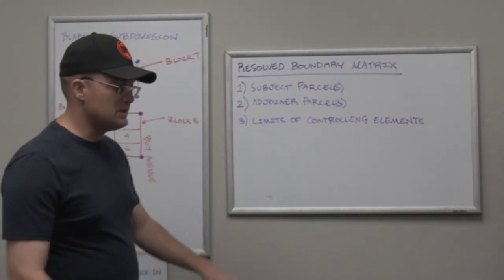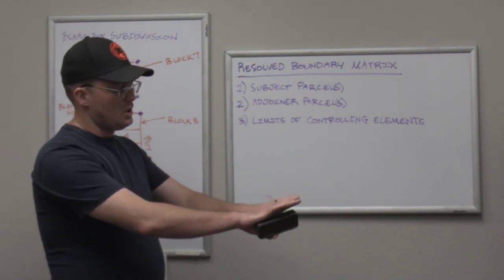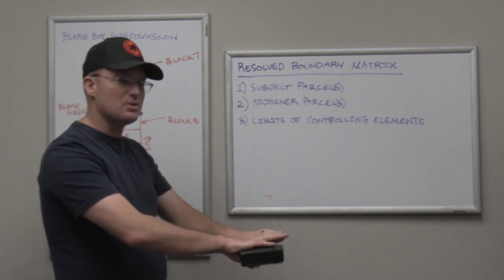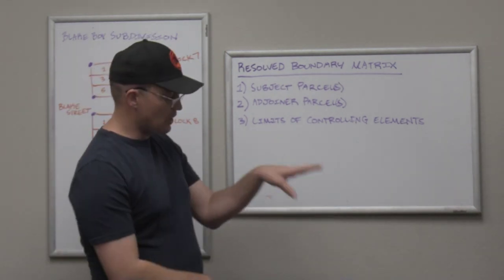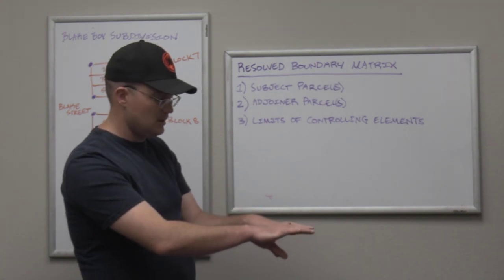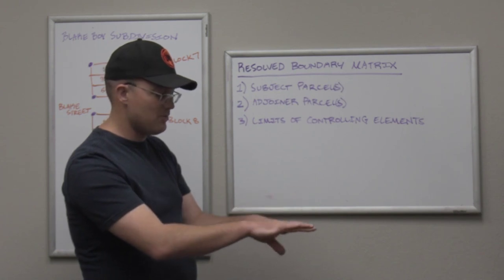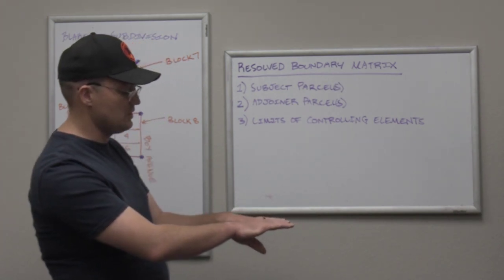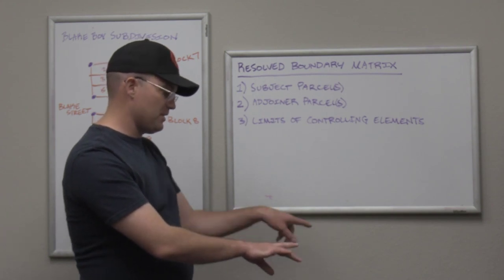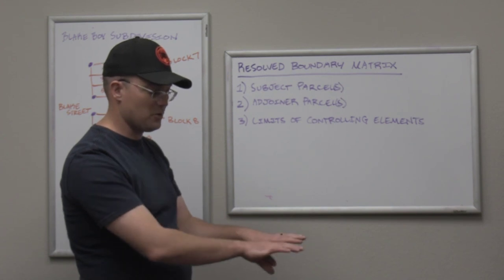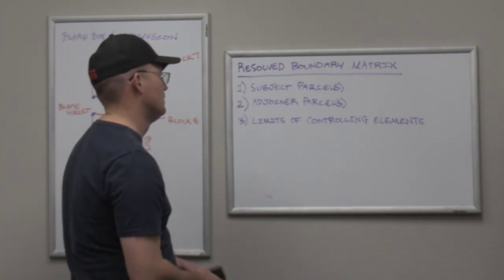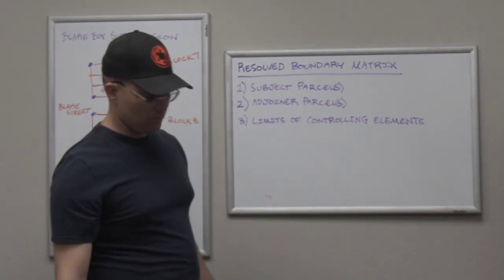One reason you need to look at your adjoining parcels is to check for common controlling calls along the shared boundary, or conflicting calls, or gaps and overlaps in the record measurements. For example, if your parcel calls an old fence, you hope the neighbor's deed also calls that fence. But if your deed calls a fence at the top of the bank of the creek and your neighbor's deed calls the centerline of the creek, you've got conflicting controlling calls — and you'd never know that without looking at the neighbor's deed. Similarly, if your deed says 100 feet from one corner and the neighbor's says 100 feet from the other, totaling 200 feet, but you've only got 198 feet between those corners, that's an overlap in the record.